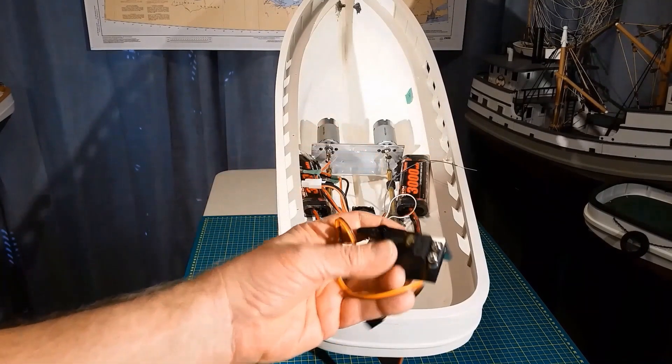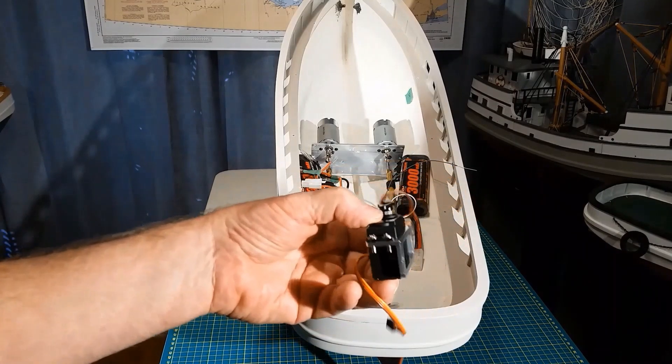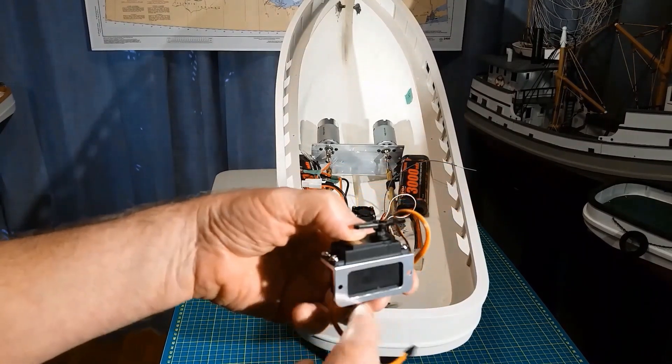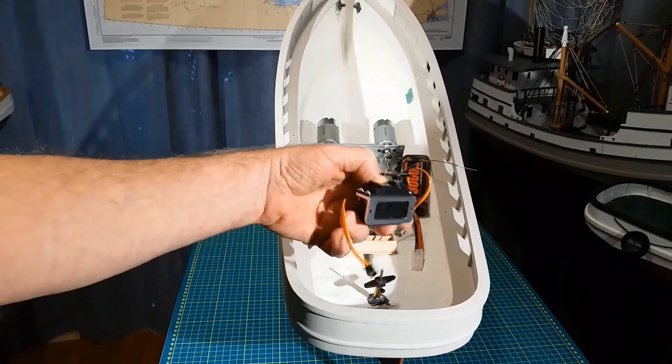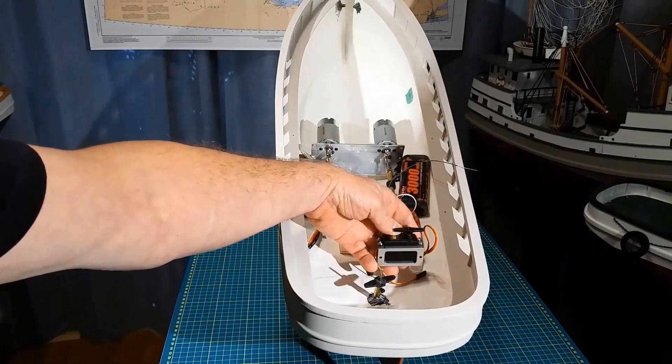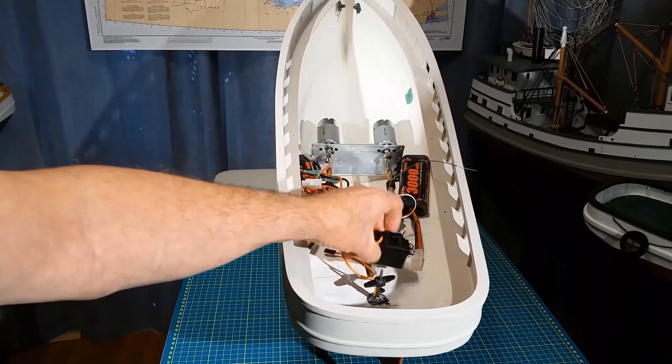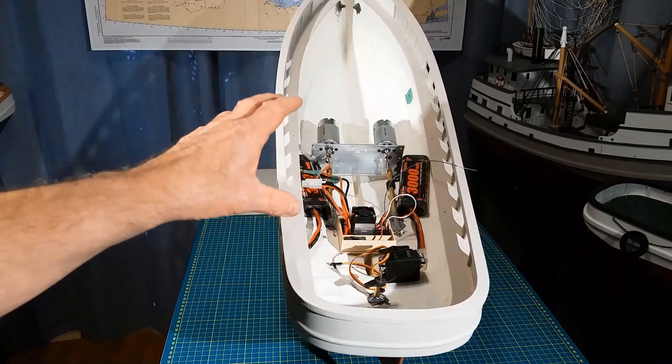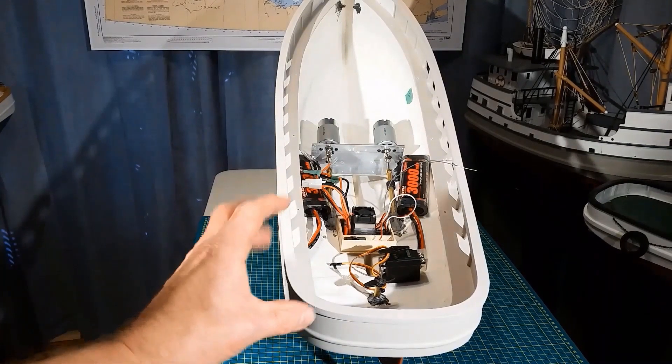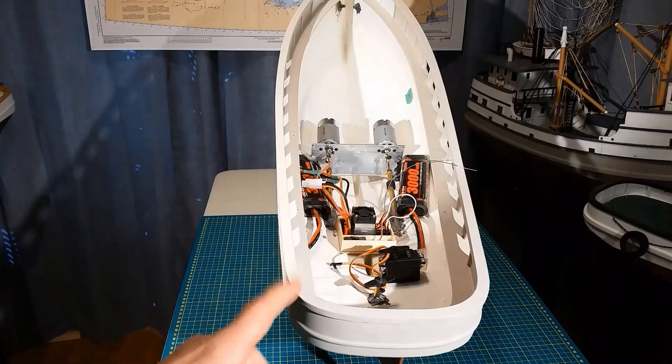And then further aft, we have to mount a servo. This servo has a little aluminum bracket here. The bracket has to be secured to some kind of solid piece of wood or fiberglass, something that's good and firm. So these are three basic structures that have to be made. Let's start with the battery boxes.